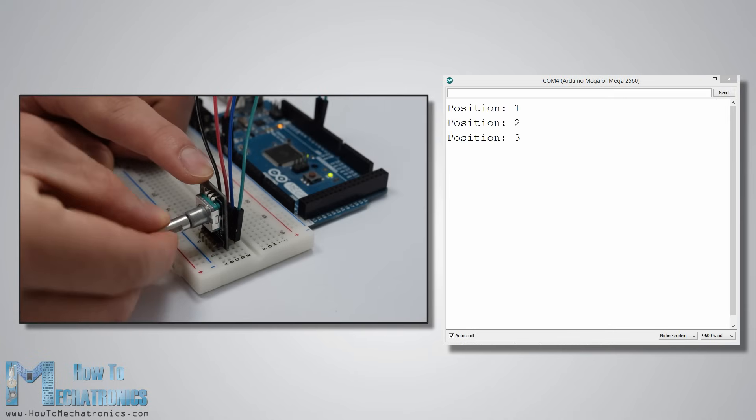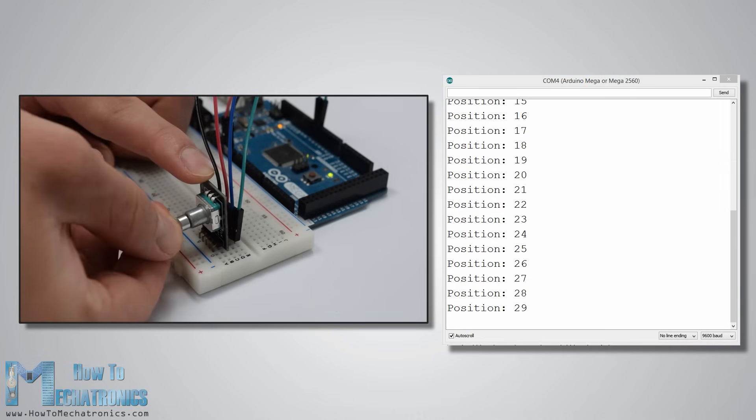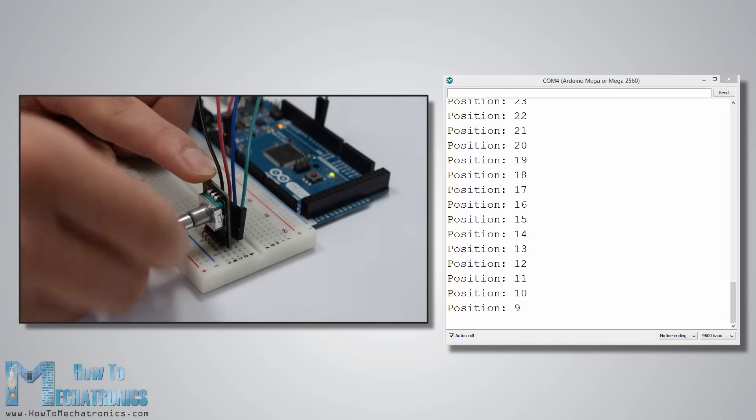If we start rotating the encoder, we will start getting the values in the serial monitor. The particular model that I have makes 30 counts each full cycle.